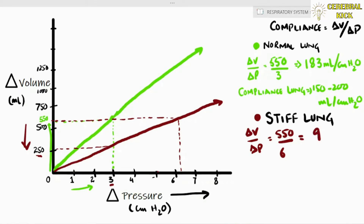A normal healthy lung accommodates 550 ml of gas at a net pressure change of 3, whereas a stiff lung requires a greater pressure change of 6 to accommodate the same volume.